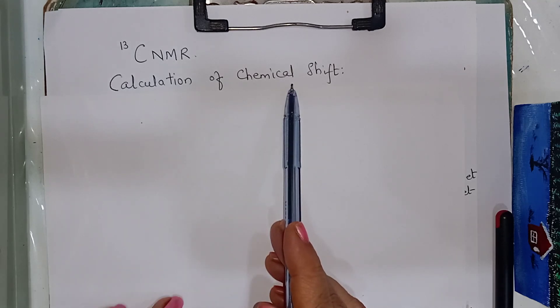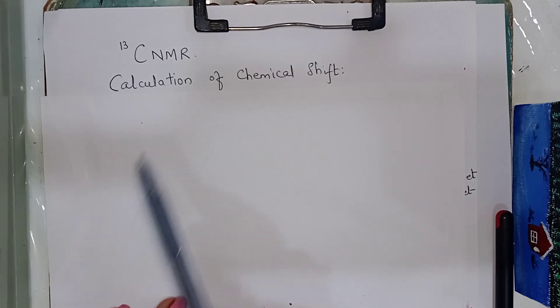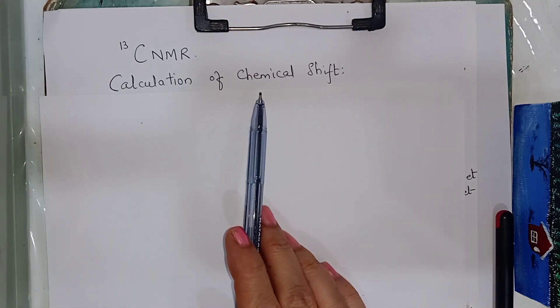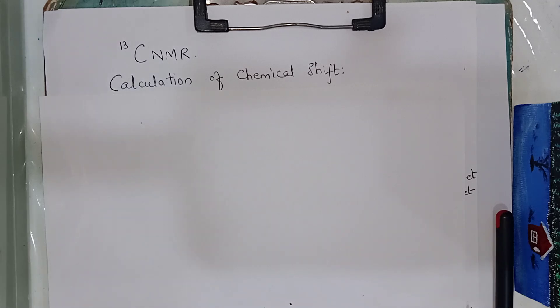Previous videos you can check out for the different types of NMR. So, let us start. The chemical shift of various carbons can be empirically calculated by adding the additive shifts due to alpha, beta, gamma substituents to the base value.